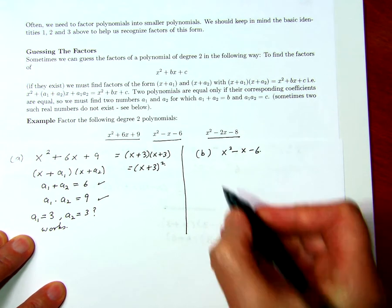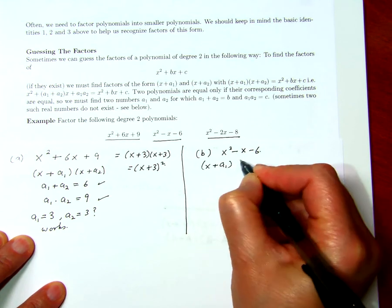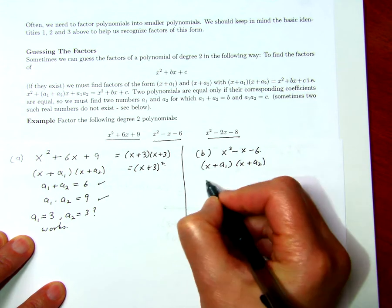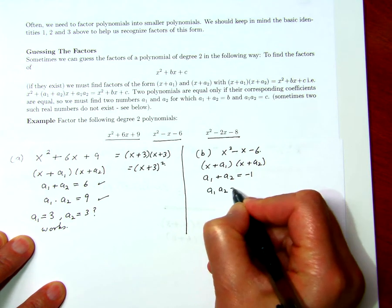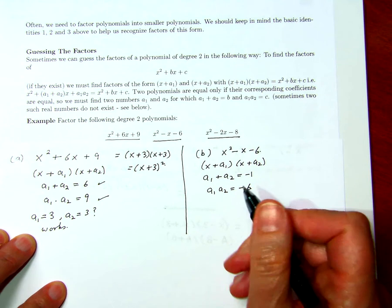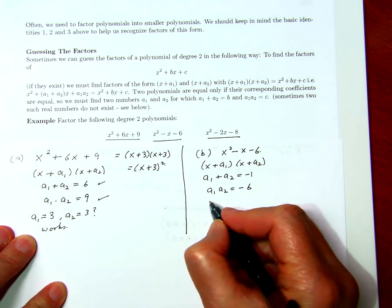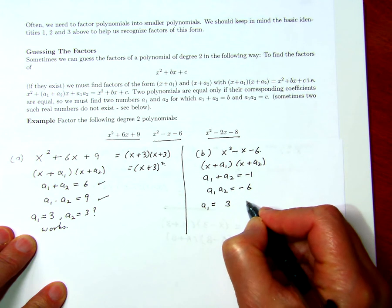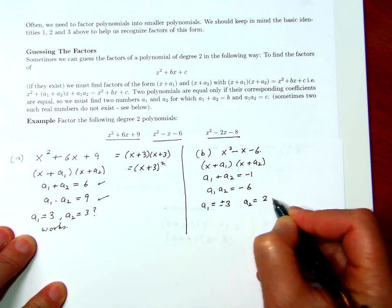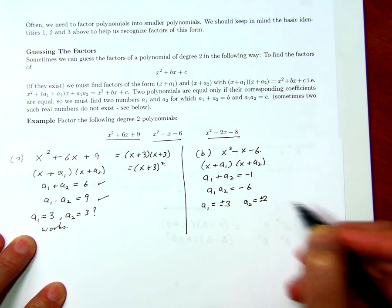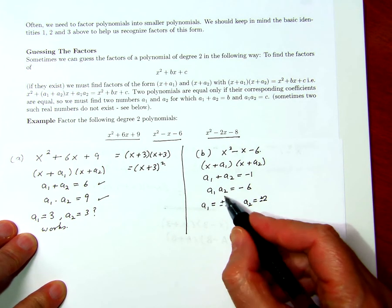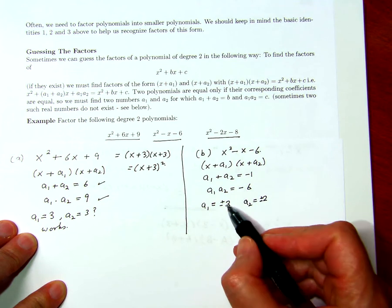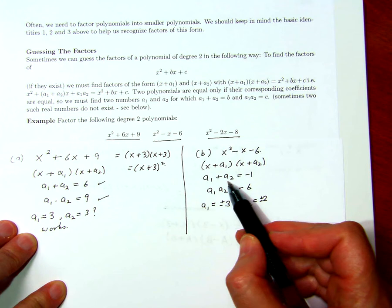For this one, I'm going to break it up as x plus a1 times x plus a2, and I should have a1 plus a2 is minus 1, and a1 times a2 is minus 6. I'm looking for two factors of minus 6, so I'm going to try 3 and 2, and this should be plus or minus 3 or plus or minus 2. One should be a minus and one should be a plus in order for this to happen, and in order for a1 plus a2 to be negative 1, then 3, the bigger one, should be negative.